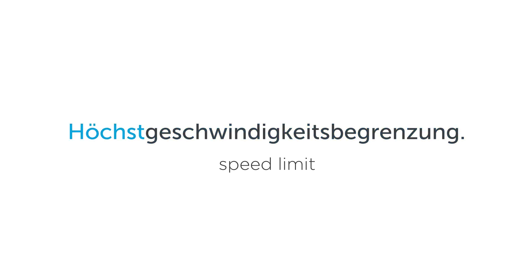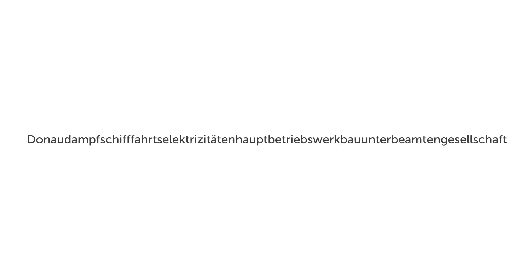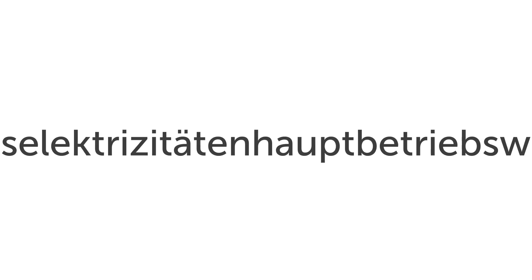If we break it down, we get: Höchst meaning 'highest,' Geschwindigkeits meaning 'speed,' and Begrenzung meaning 'limit.' And just for fun, the longest officially approved word in German is Donaudampfschifffahrtselektrizitätenhauptbetriebswerkbauunternehmerbeamtengesellschaft. That's a mouthful!